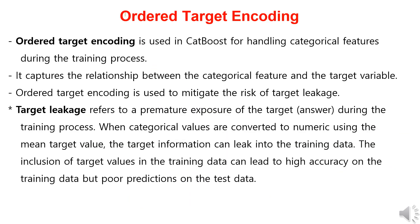Next, I will explain ordered target encoding used in CatBoost. It is a method used to handle categorical features during training that captures the relationship between categorical features and the target variable while reducing the risk of target leakage. Target leakage refers to premature exposure of the target during training — when converting categorical values to mean target values, target information may leak into the training data, leading to high training accuracy but poor test predictions.